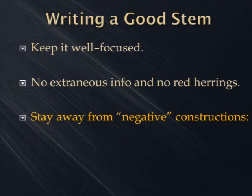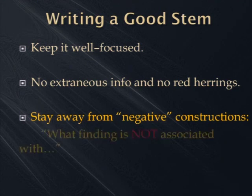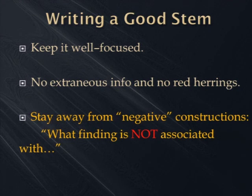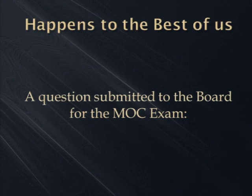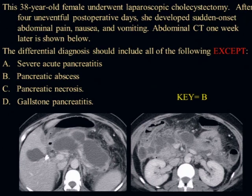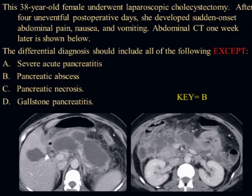How about negative constructions? We see these constantly. 'What finding is not associated with?' 'All the following except.' 'Which of the following is least likely.' They've done studies showing a significant minority of people don't flip from looking for the right answer into looking for the wrong answer — even if you put it in red or capital letters, it just doesn't register. So there's no reason to do that. We'll talk about some exceptions later.